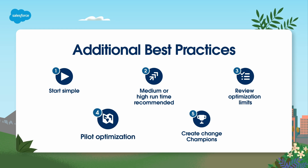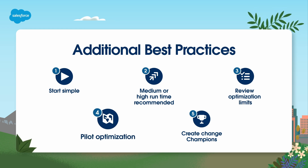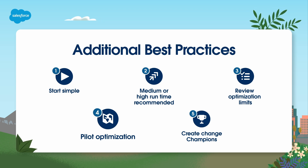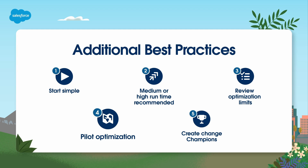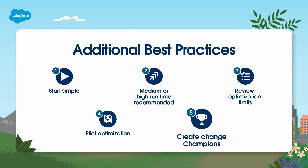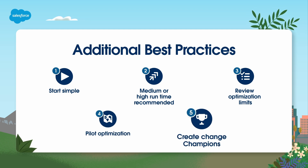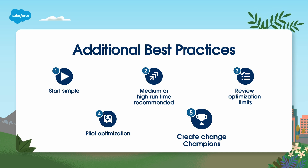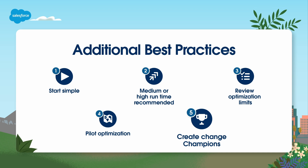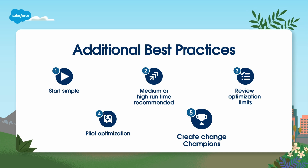Where possible, consider piloting optimization in a few key territories or markets. This allows you to simplify the early phases of your rollout and capture feedback quicker. Identify change champions for your business who are subject matter experts in your field service processes and optimization using Salesforce Field Service. This will help you provide points of contact and expertise for your teams during the rollout.